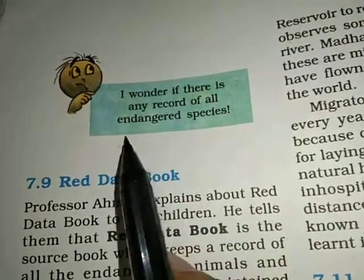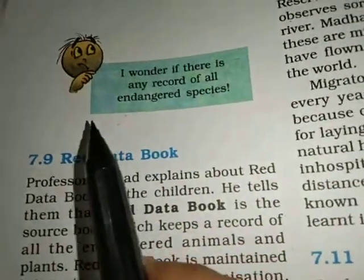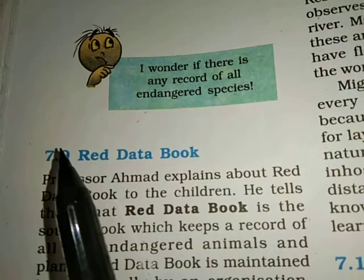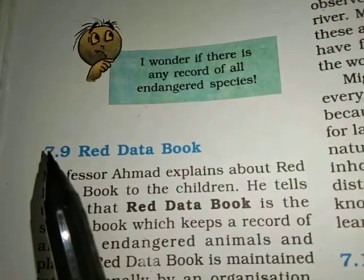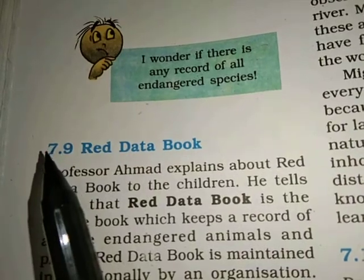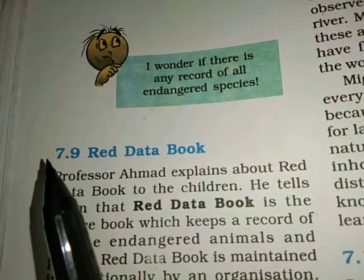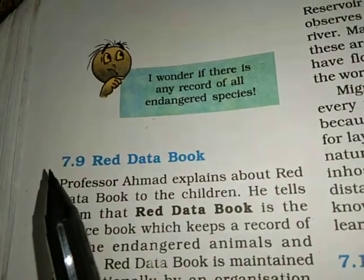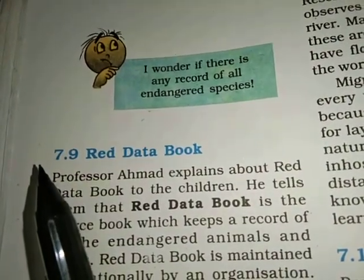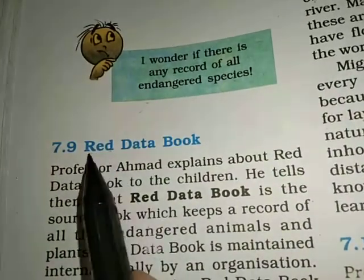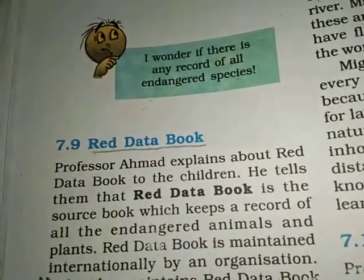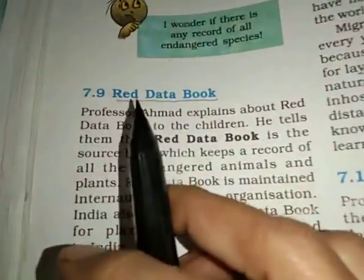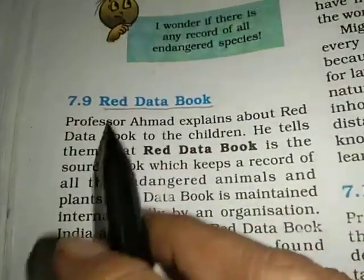I wonder if there is any record of all endangered species - some record must be kept so we know which species are in danger. For example, our national animal the Bengal tiger - how did we know it was on the verge of extinction? When we counted and found how few animals of that species were still alive, then we started implementing certain measures to protect their population. That is recorded in a book called the Red Data Book, where details of all different species, especially those on the verge of extinction, are kept.